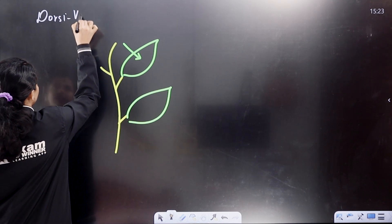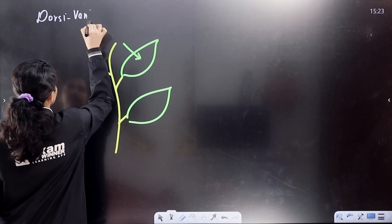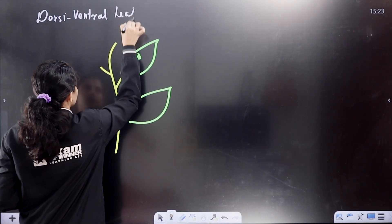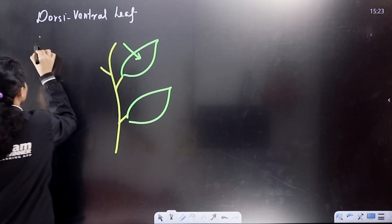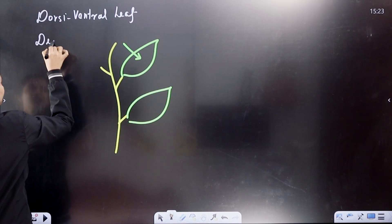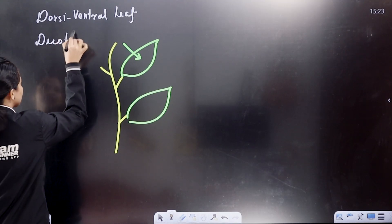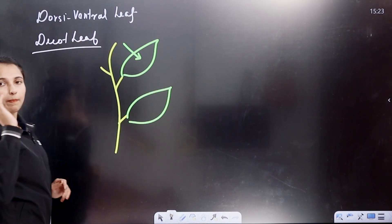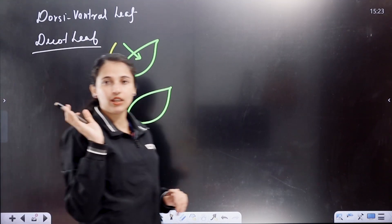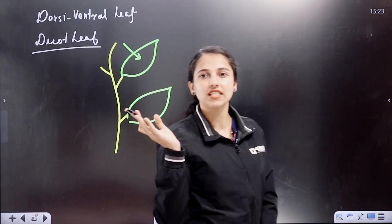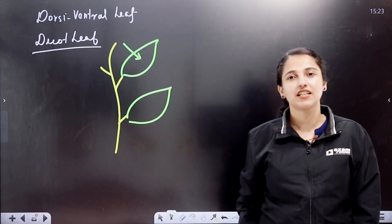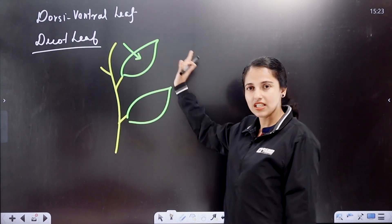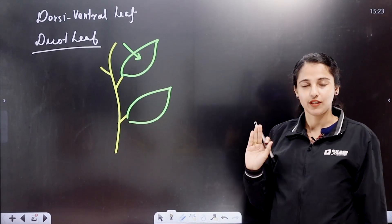This is called a Dorsiventral leaf. We call it the dicot leaf. It has a dorsal and ventral surface.